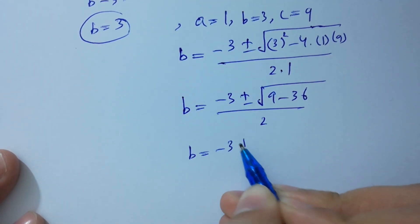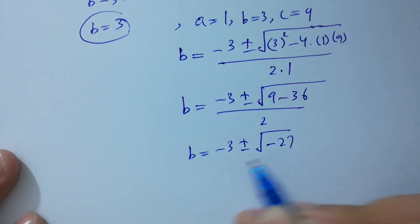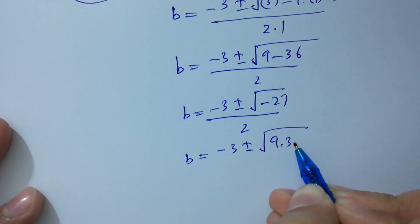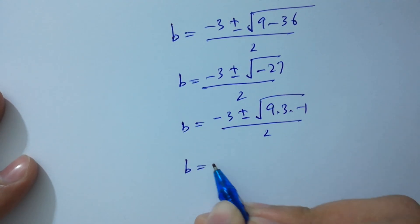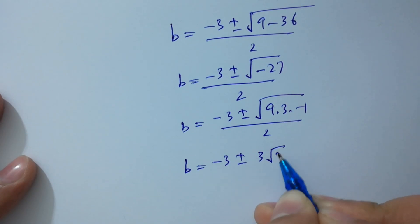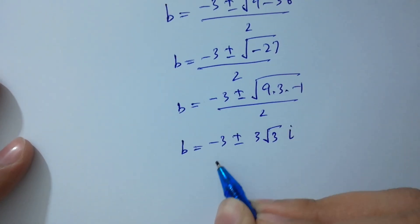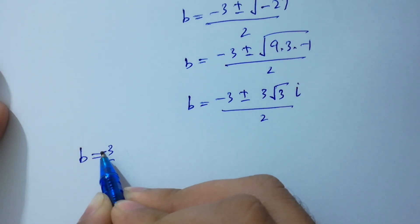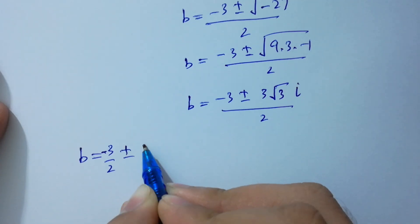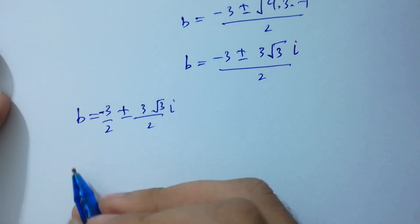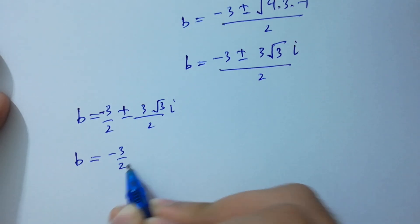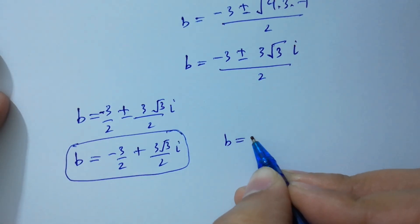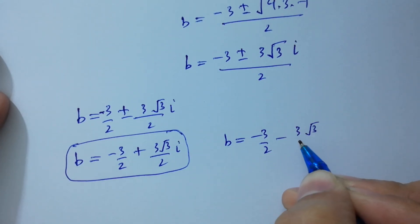B equals minus 3 plus or minus square root of 9 minus 36 over 2. B equals minus 3 plus or minus square root of negative 27 over 2, which becomes minus 3 plus or minus 3 square root of 3 times i over 2. So the fifth solution is B equals minus 3 over 2 plus 3 square root of 3 over 2 times i, and the sixth solution is B equals minus 3 over 2 minus 3 square root of 3 over 2 times i.